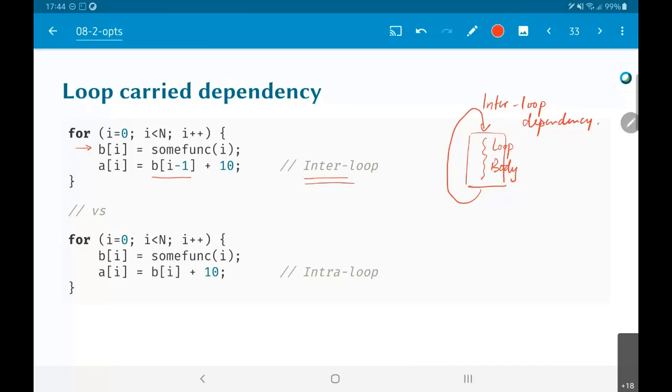But if you look at the second part of the code, essentially what this says is I have some part of the code over here, and this is now an intra-loop. Whatever I assigned to b over here is now being used again at this point. So the dependency lies within the loop itself.